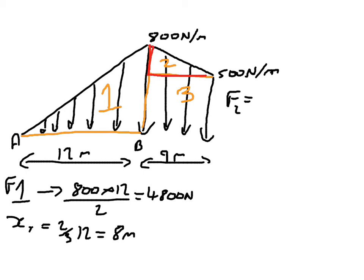So, region 2, the length of my blue line here must be 300 newtons per metre. So, I'm going to have 300 newtons per metre times the distance, 9 metres, and then divided by 2. So, that second force is going to equal 1,350 newtons.